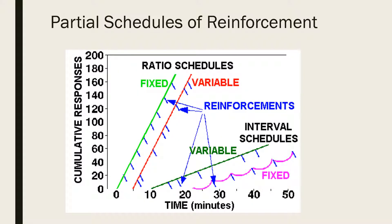If we look at a graphical representation of each of these four partial schedules, the reinforcement is illustrated on each line as a blue dash. In fixed schedules, this occurs at even intervals on the graph, whereas it is different each time for variable schedules.